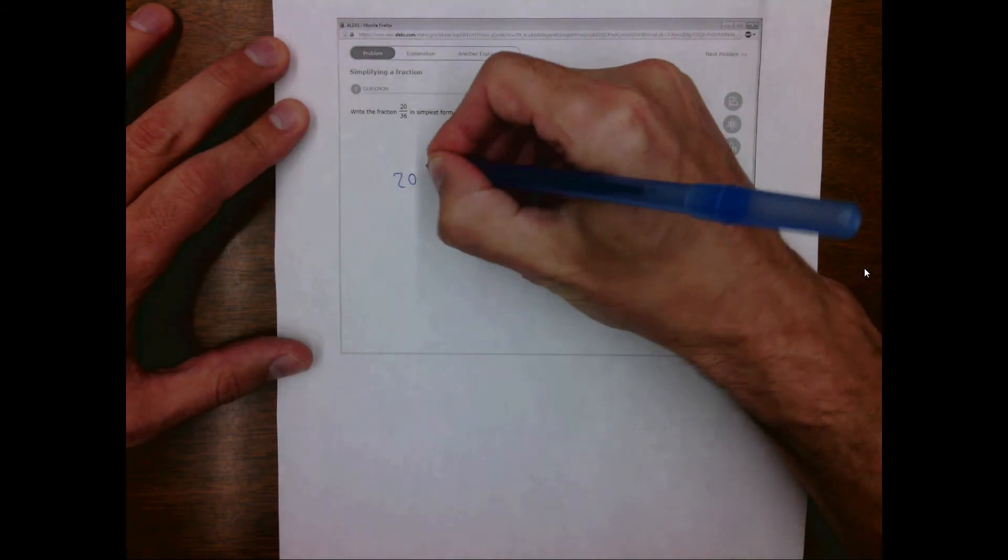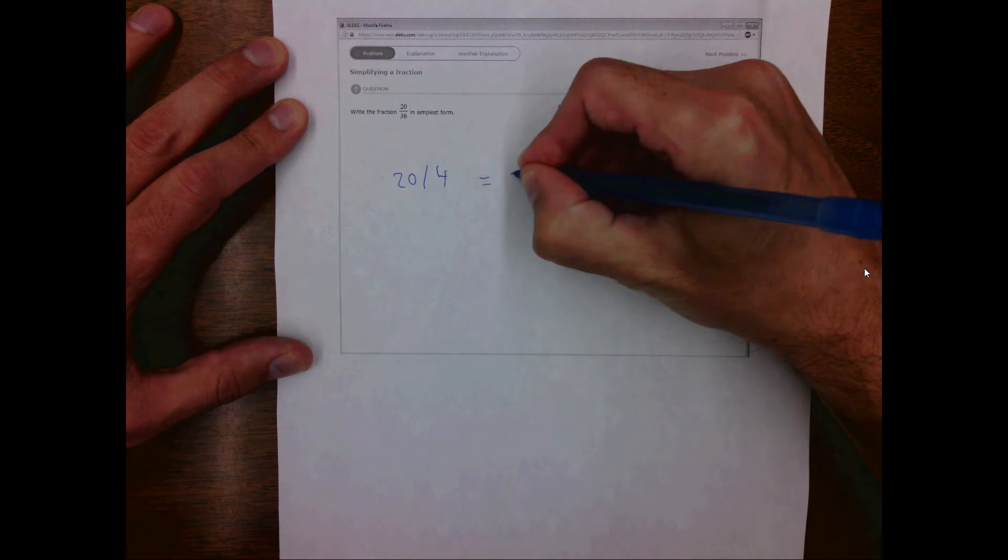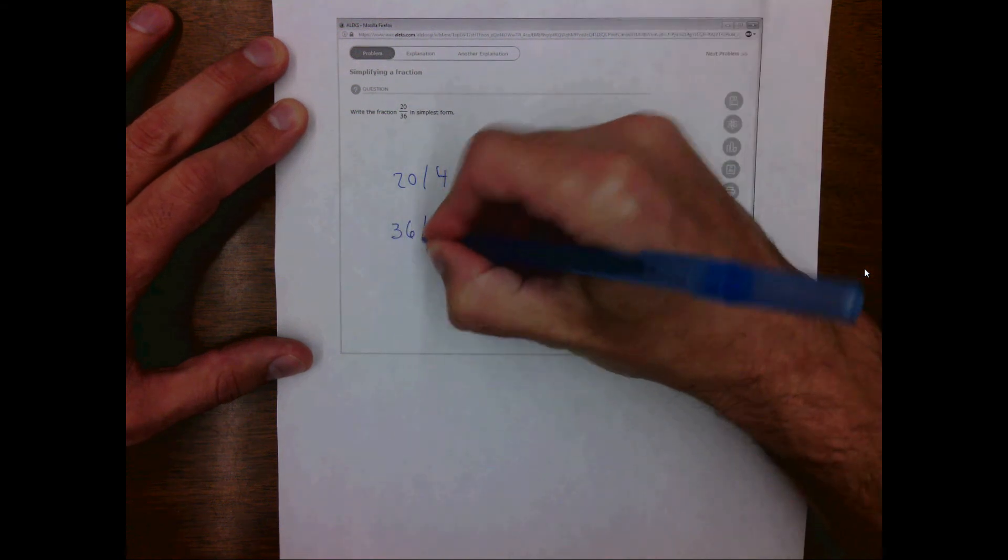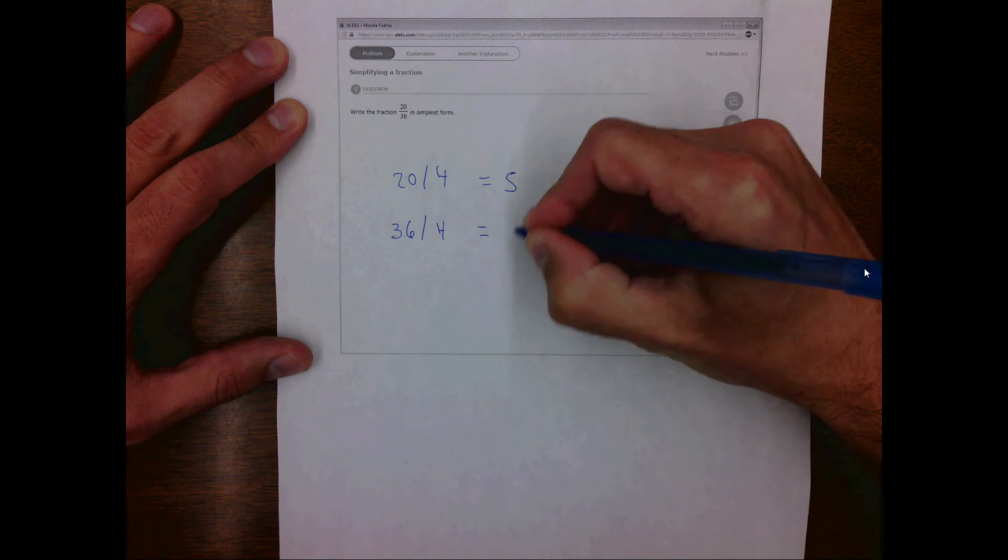If we take 20 divided by 4, that equals 5. If we take 36 divided by 4, that equals 9.